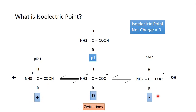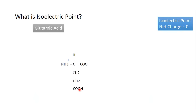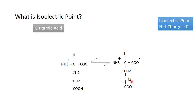For example, if we have a protein of 100 amino acids, then 50 will be positively charged and 50 will be negatively charged — at this point the protein is at its isoelectric point, holding a zero net charge. Every amino acid has a different isoelectric point. Take glutamic acid as an example: because it is an acidic amino acid, it has an additional carboxyl group on its side chain.